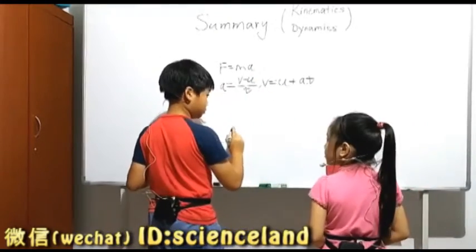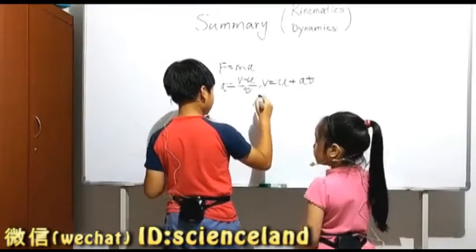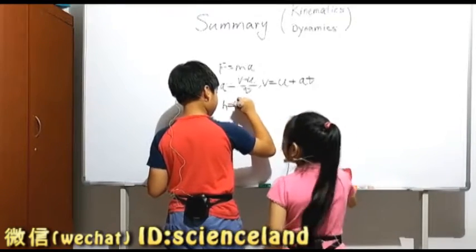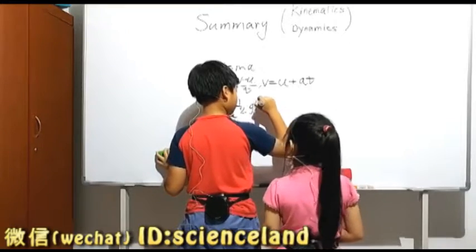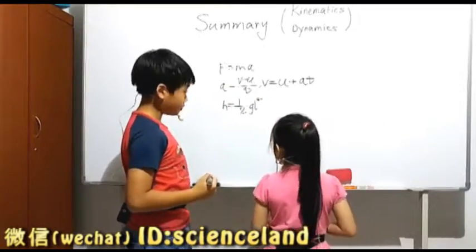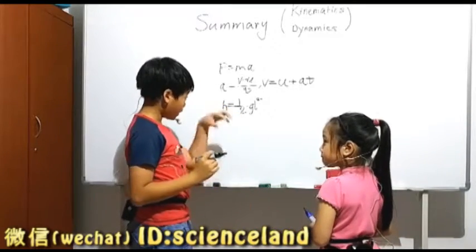Okay, another formula. H? H equals half gt squared. Okay. This is only for free fall. Okay.